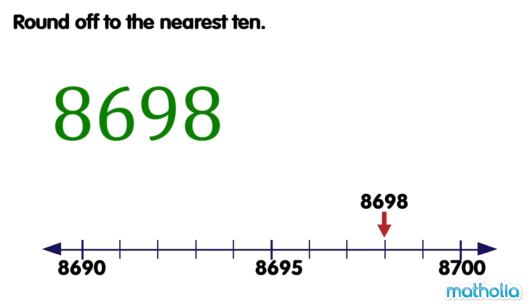Let's round off eight thousand six hundred and ninety-eight to the nearest ten. When rounding to the nearest ten, we look at the digit in the ones place. The digit in the ones place is eight.